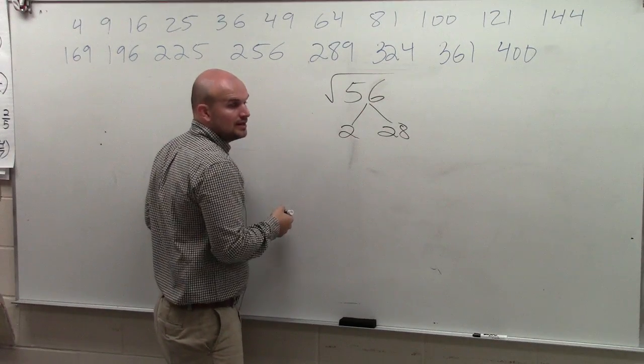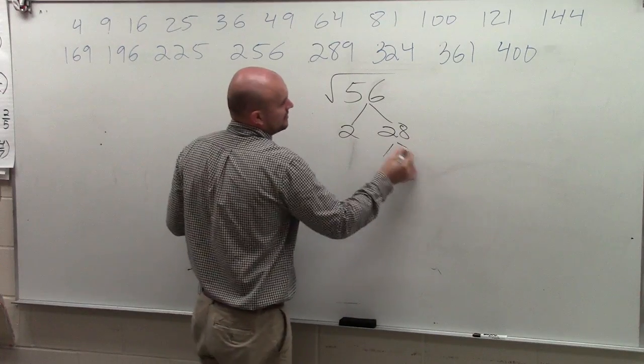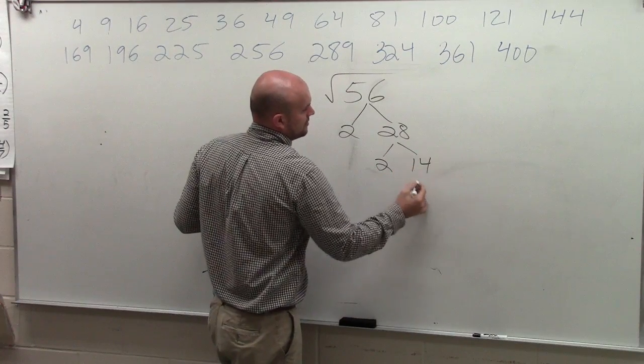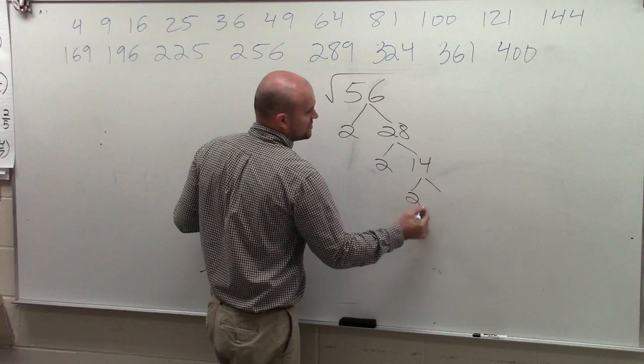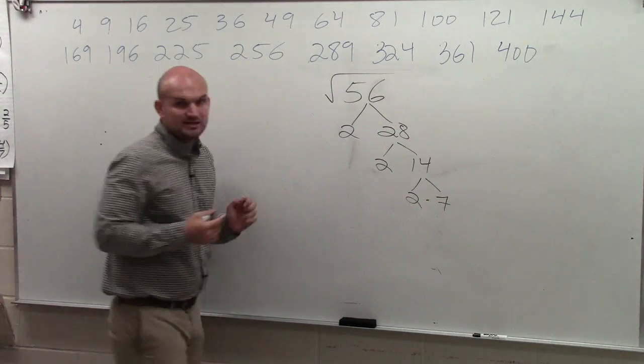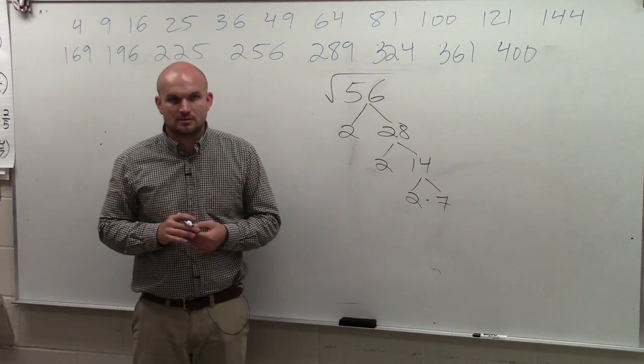Let's just divide it by 2. And then 28, I'll divide that by 2 again. And I'll divide that by 2 again, which is 2×7. Would everybody agree I did my prime factorization correct? Correct. OK.